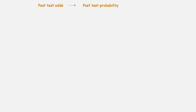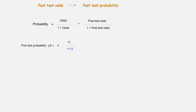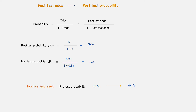Now in the final step, we convert post-test odds to post-test probability. The formula for calculating probability from odds is: odds divided by 1 plus odds. If test result is positive, post-test odds of 12 results in post-test probability of 92%. If test result is negative, post-test odds of 0.3 results in post-test probability of 24%. So with this test, a positive result increases pre-test probability from 60% to post-test probability of 92%, and a negative result decreases pre-test probability from 60% to 24%.